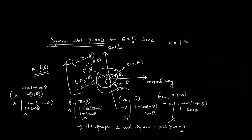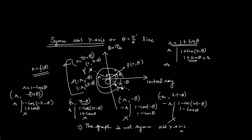But if you have the graph r = 1 + sin θ, and you substitute the point (r, π − θ) — replacing r with r and theta with π − θ — we get 1 + sin(π − θ) = 1 + sin θ, which is again r. So this satisfies the graph. This implies the graph is symmetrical about the y-axis. If any one of the four representations satisfies the graph, our graph is symmetrical about the y-axis. If none of them satisfy, the graph is not symmetrical about the y-axis.